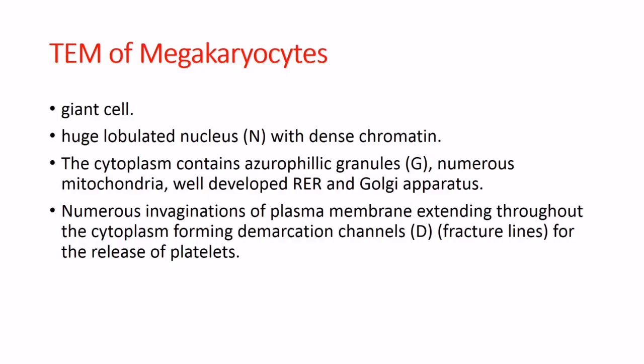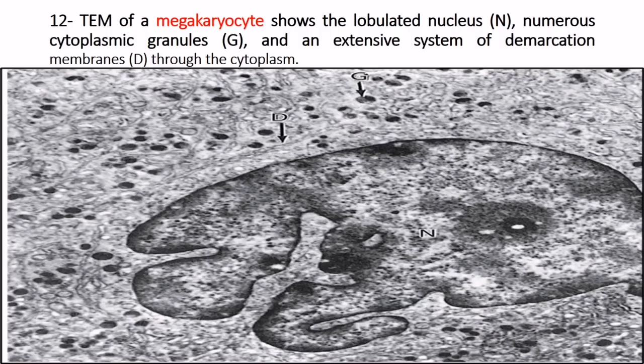Transmission electron microscope of the megakaryocyte: it is a giant cell with a huge lobulated nucleus with dense chromatin. The cytoplasm contains azurophilic granules, numerous mitochondria, and well-developed RER and Golgi apparatus. Numerous invaginations of the plasma membrane extend throughout the cytoplasm, forming demarcation channels for the release of platelets.